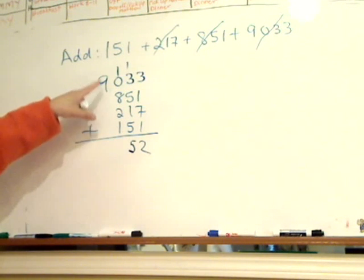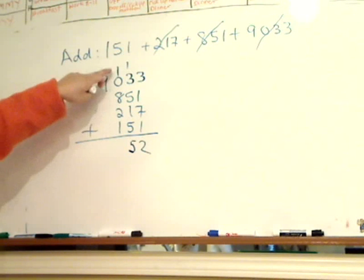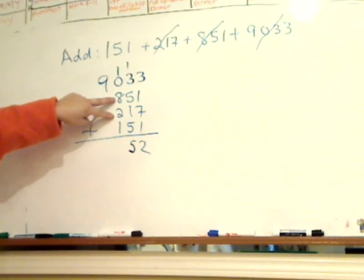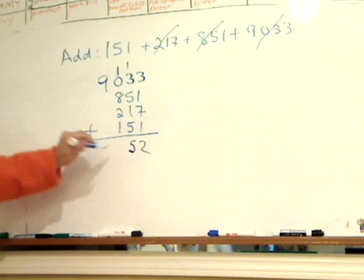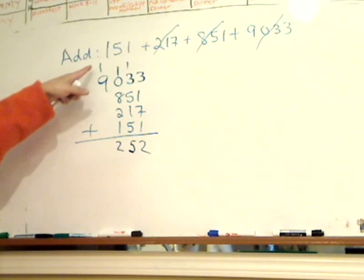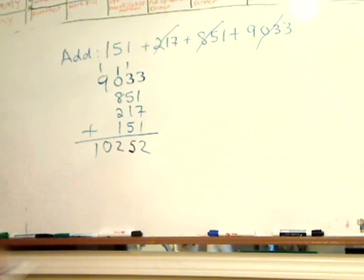And I carry the hundreds to the hundreds column. 8 plus 2 is 10, plus 2 is 12. And now it's 1,000, carry the 1,000 over, so 1 plus 9 is 10. So that answer is 10,252.